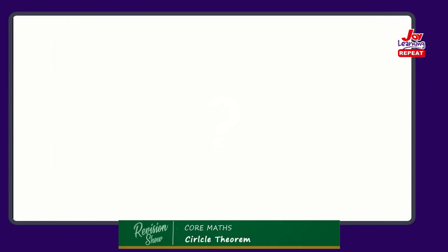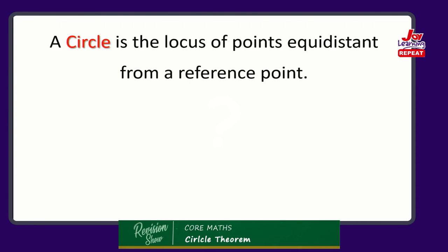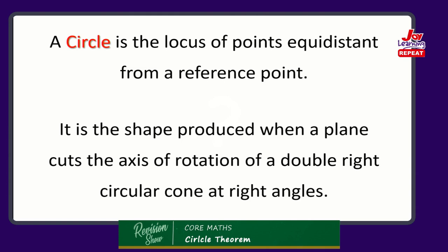Let's recap. A circle is the locus of points equidistant from a reference point. It is also defined as the shape produced when a plane cuts the x-axis of rotation of a double right circular cone at right angles. Please take down those definitions.